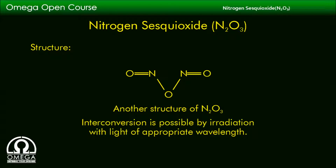This is another possible structure of N2O3. Interconversion between the two structures is possible by irradiation with light of appropriate wavelength.